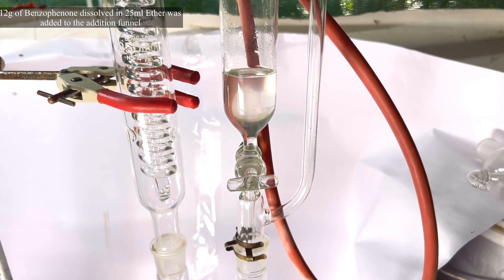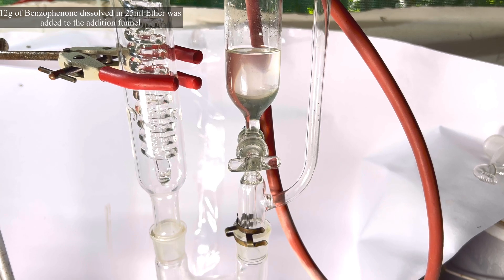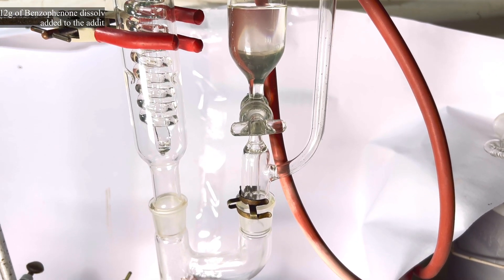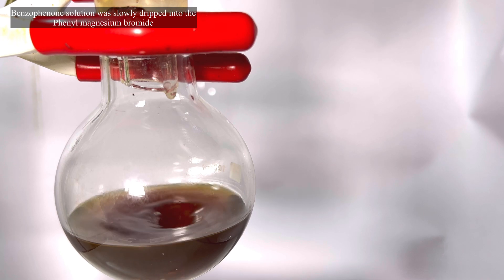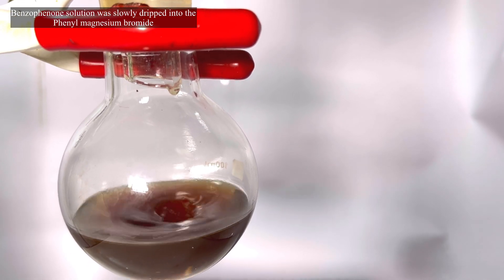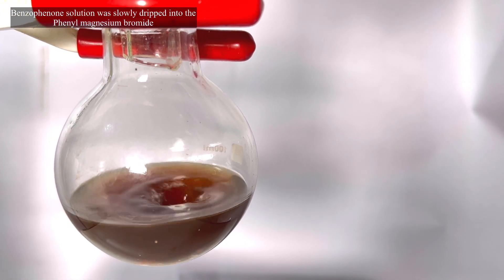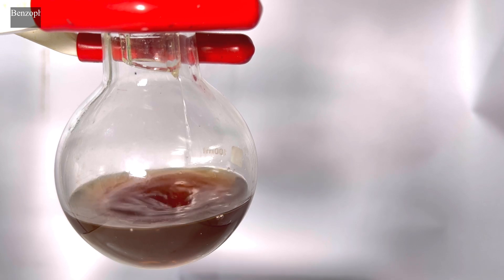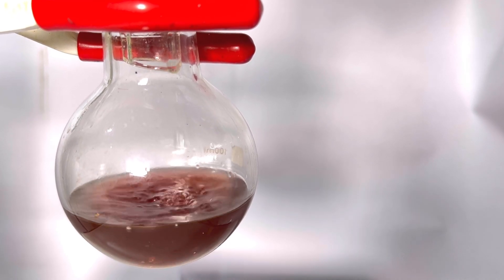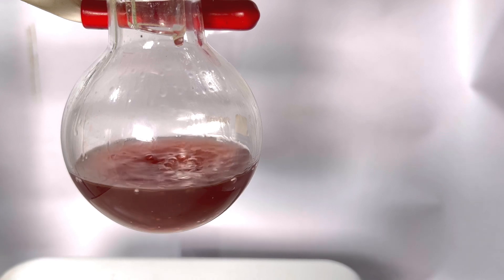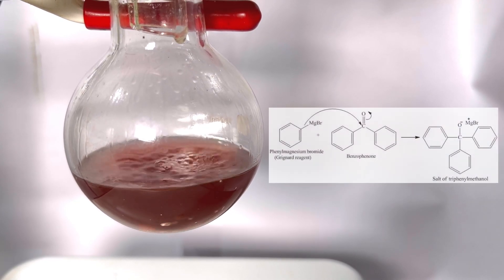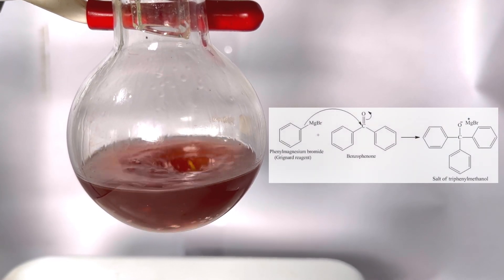Now 12 grams of benzophenone dissolved in 25 ml of anhydrous ether was added to the addition funnel. Slowly add the benzophenone solution to the phenylmagnesium bromide. As you can see some amount of magnesium turnings remained unreacted. That's okay. On adding the benzophenone, you see the solution turns to bright pink color. This is due to the formation of triphenyl methoxy anion.